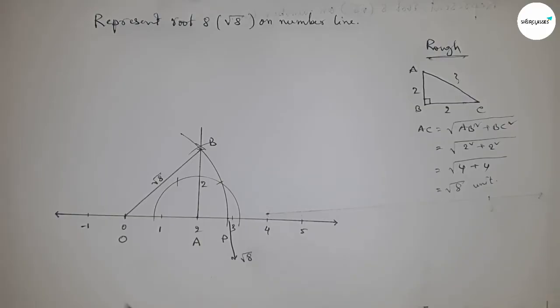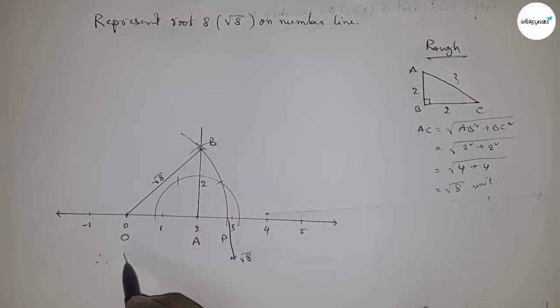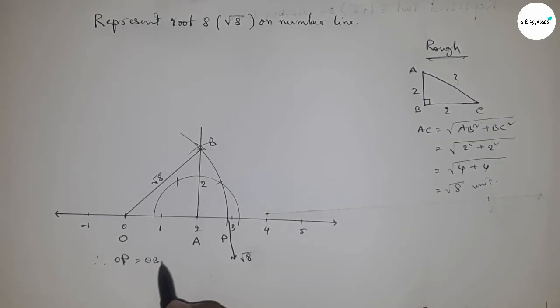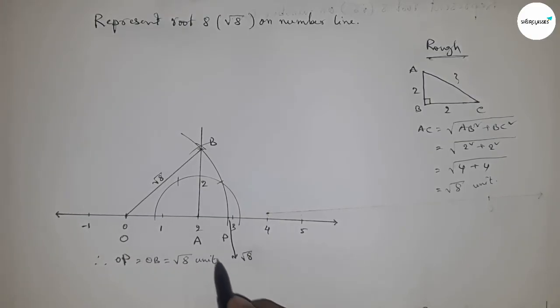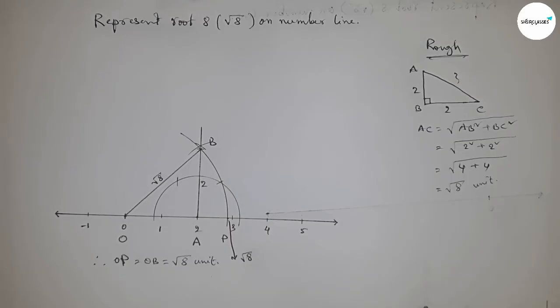Therefore, distance OB and OP are equal, so OP equal to OB equal to root 8 unit. That's all. Thanks for watching, please subscribe, like and comment on my video.